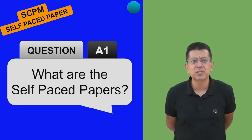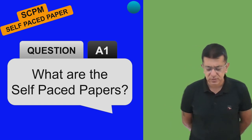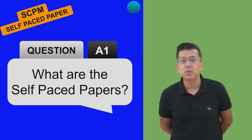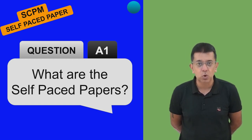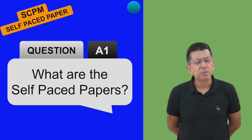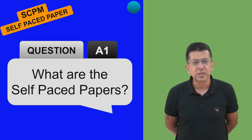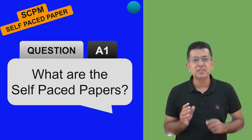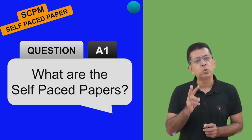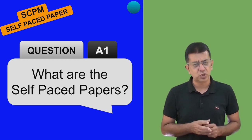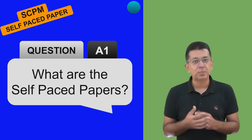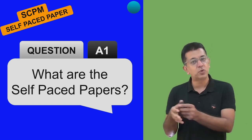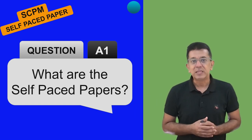The first question: what are self-paced papers? In the earlier scheme there were eight papers, out of which two papers were Law and Strategic Cost and Performance Evaluation - paper three and paper five. Now ICAI wanted the number of papers restricted to only six, so two papers out of the eight were shifted to self-paced papers. Self-paced papers means the pattern is going to be different.